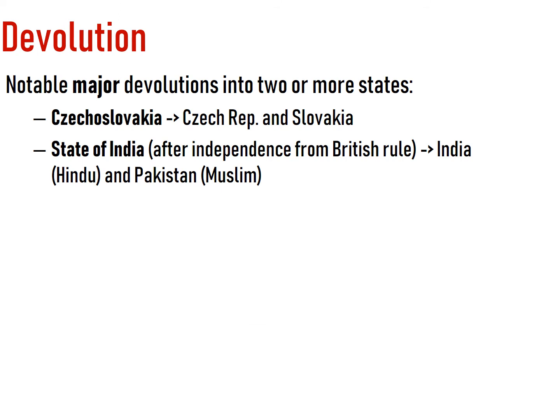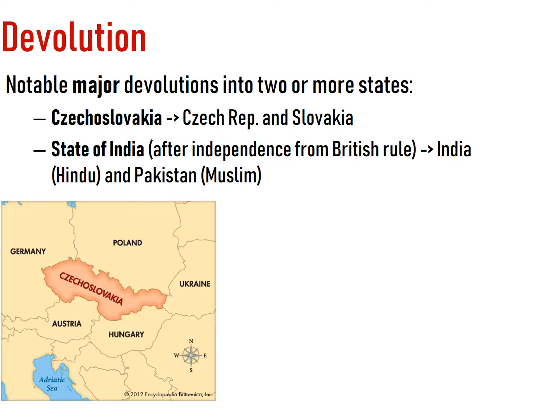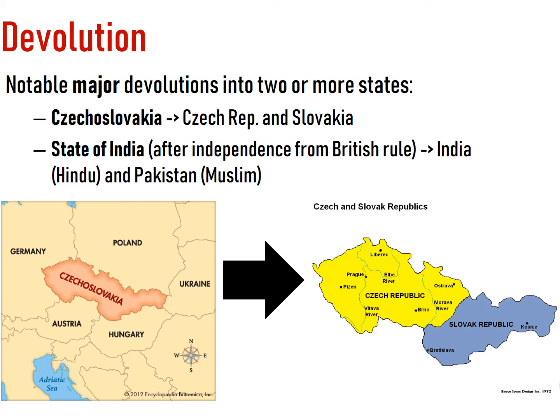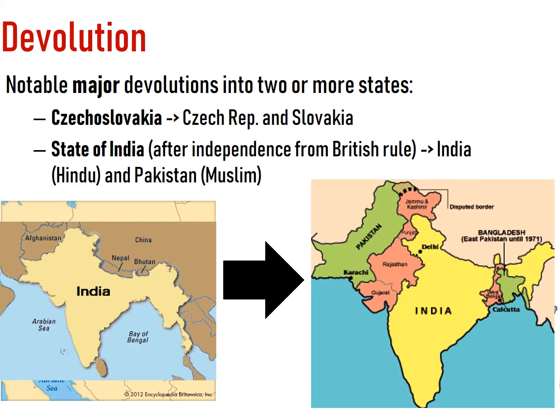So, major devolution. Sometimes giving a little power just doesn't work out — sometimes they say that's not enough, we've got to leave. There are two major devolution examples you need to know. The first is Czechoslovakia turning into the Czech Republic and Slovakia, or Czechia now. And then the state of India — while the British had colonized India, after they left, they partitioned India. You should know what type of cultural boundary that is. They created two nation-states. Czechoslovakia turns into the Czech Republic and the Slovak Republic. India is partitioned. This is major devolution: it happens when new countries are formed, when nationalities break off because they have this idea of self-determination and want sovereignty. A multinational state that breaks down into multiple states turns into a nation-state.